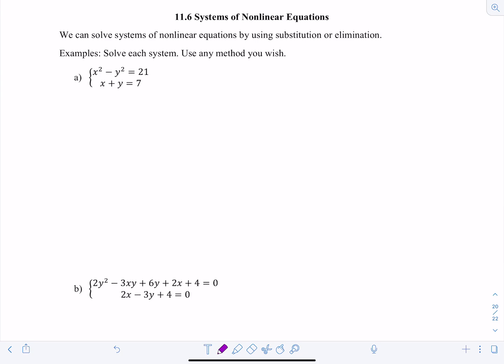So first example, we have the system x squared minus y squared equals 21, and x plus y equals 7. Now the elimination method will not help us here, because notice in the first equation both the variables are squared.